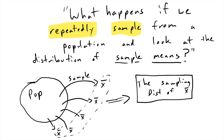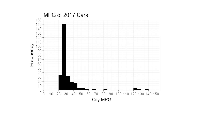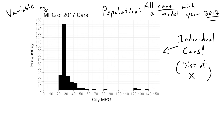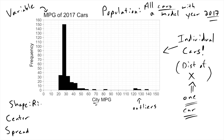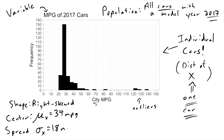Let's look at what this looks like using some actual data and some actual repeated sampling. The variable I want to look at is the miles per gallon of cars from the year 2017, looking at one car at a time. When we're talking about a distribution, we think about three things. The shape of this distribution is fairly clearly right skewed. The center — the mean miles per gallon for all vehicles shown — is 34, and the spread as measured by the standard deviation is fairly large: 18 miles per gallon.